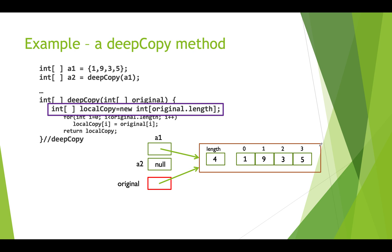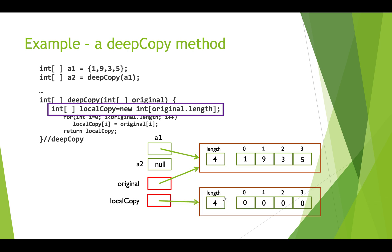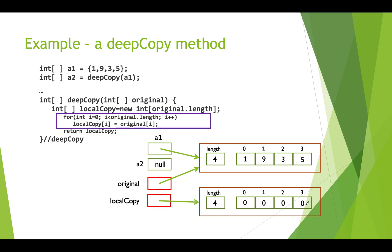Next, we create a new array inside the function of the same length as the original array. The original array has length 4, so we create a new array also of length 4, assigned to localCopy, with default integer values of all zeros. Then we do a loop copying values from original to localCopy. First iteration copies 1, next copies 9, then 3, then 5. Now we have an array inside our function with all the same values as the original array.